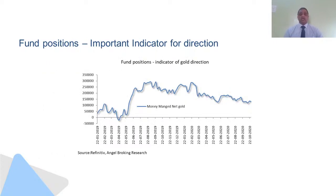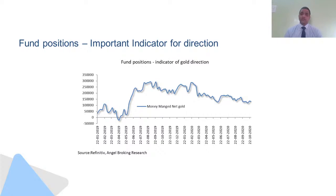This particular chart tells you how fund managers have been allocating gold as a part of their portfolio. Almost through all of 2020, you have seen gold prices stabilizing or possibly on the higher side. One reason for that is that fund managers across the globe have been accumulating gold, as you can see on the right hand side of that particular graph, which has led to a steady direction of gold prices heading higher.